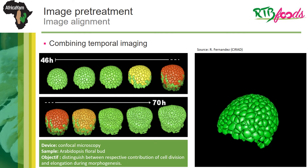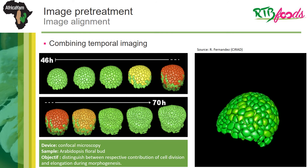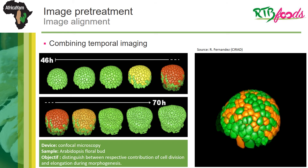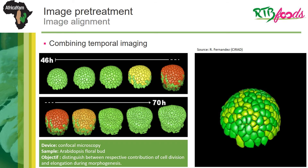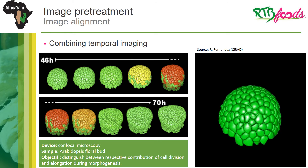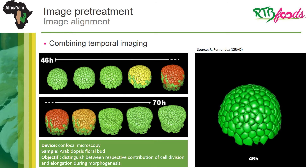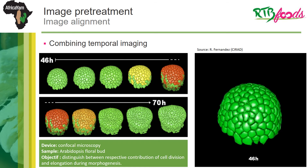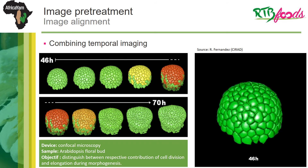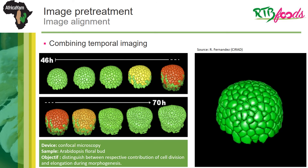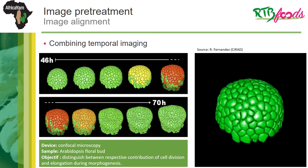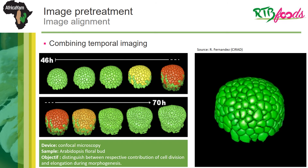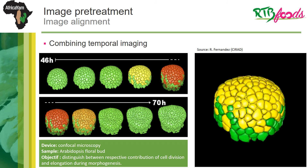Finally, images can also be combined in time in order to detect and analyze dynamics. In this example, image alignment allowed to distinguish between the respective contributions of cell division and elongation during morphogenesis of an Arabidopsis floral bud.